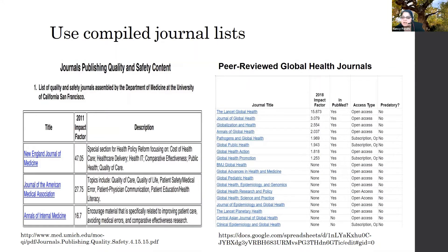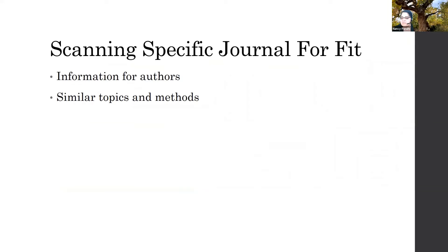There are also curated lists that people have compiled for you. I love this one around publishing quality and safety content — it has over 20 or 30 journals that are really friendly for QI work. It's a slightly older list compiled by UCSF, and Michigan also has it on their webpage — I've included the link. And for global health, which is a passion for many people, there's a nice grouping of different global health journals. So if you have a topic, you can just see if there's a compilation.